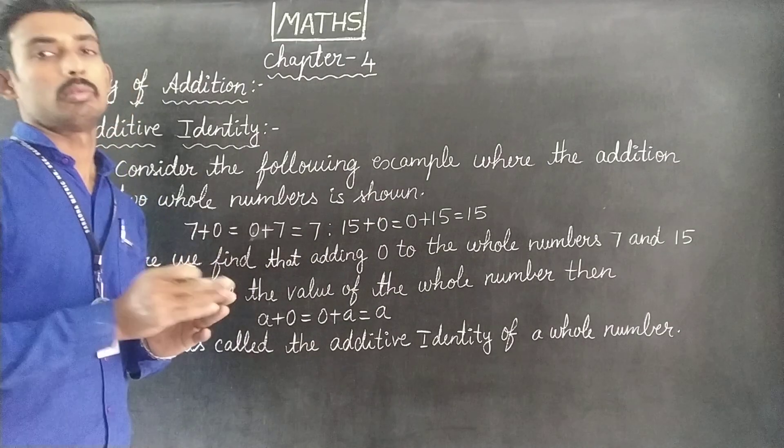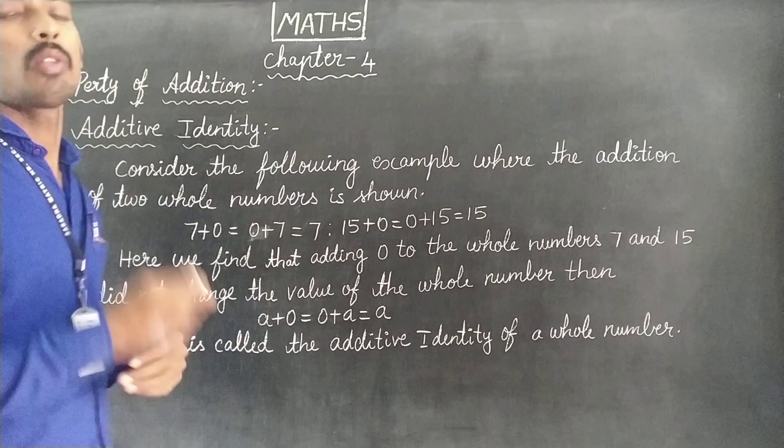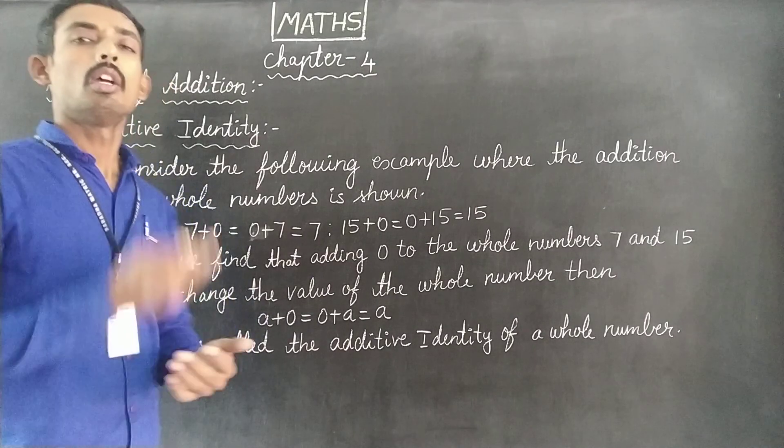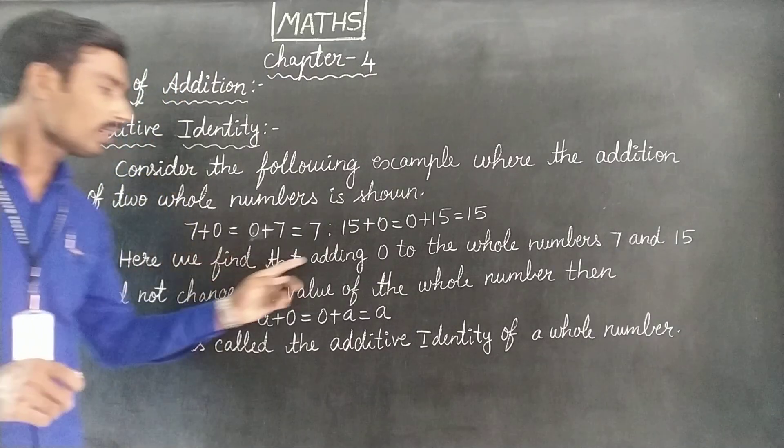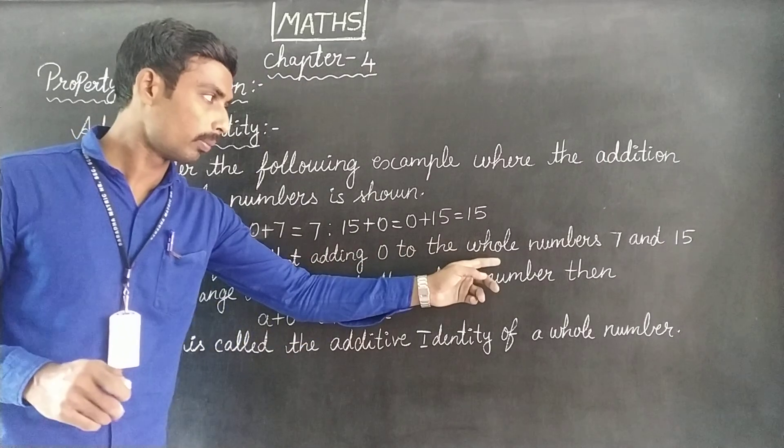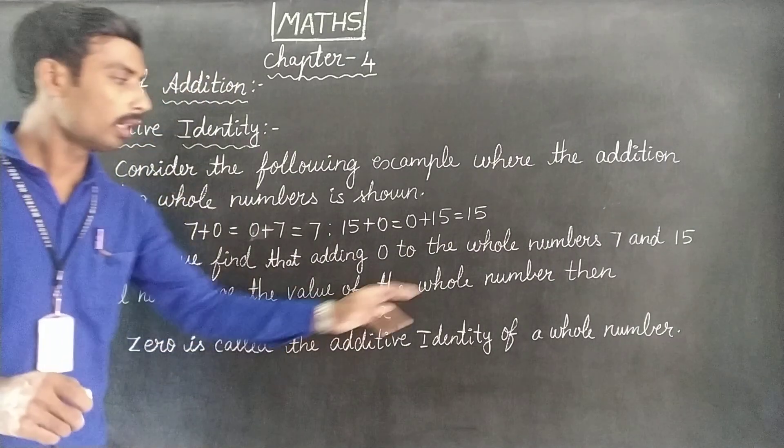Whole number plus 0 equals the same value. So here, we find that adding 0 to the whole number 7 did not change the value of the whole number.